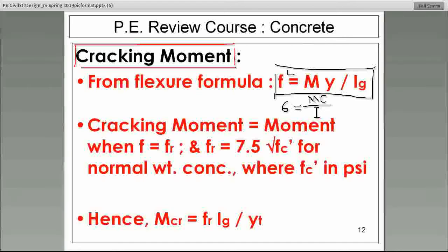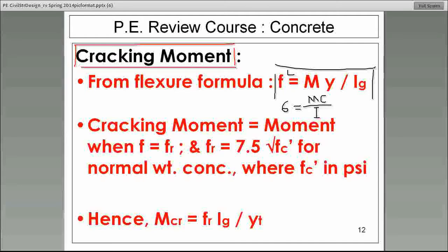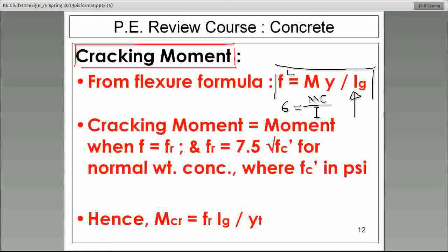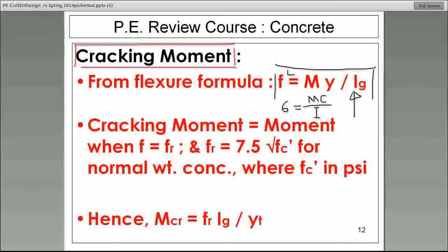And what about the other ingredients? M is M. What we called C last week is now Y. And the denominator, which was moment of inertia, is still I, moment of inertia. But this one has a subscript G. It's I sub G. G stands for gross in this case. And I will explain to you what that is in just a minute. So the flexure formula in terms of concrete is f is equal to M, Y over I.